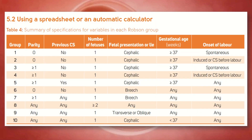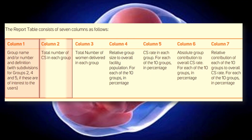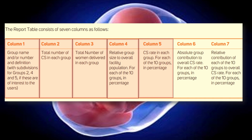Using a spreadsheet or automatic calculator, we have a summary of variables in each Robson group. The report table consists of several columns: column one contains the group name and definitions; column two is for the total number of cesarean sections in each group; column three is for the total number of women delivered in each group; column four is for the relative group size to the overall facility population; column five is for the cesarean section rate in each group; column six is for the absolute group contribution to overall cesarean section rate; and column seven is for the relative contribution of each of the 10 groups to the overall cesarean section rate.